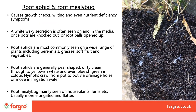Root aphid and root mealybug are probably our first proper pests. You can see from the slide that they can cause checks in growth, wilting and even nutrient deficiency symptoms. When knocking out a pot or container you'll often see a white waxy secretion on the side, which can sometimes be confused with fungal growth. We see root aphids probably more commonly than mealybug, and root aphids will attack a wide range of crops — we often see them on grasses.